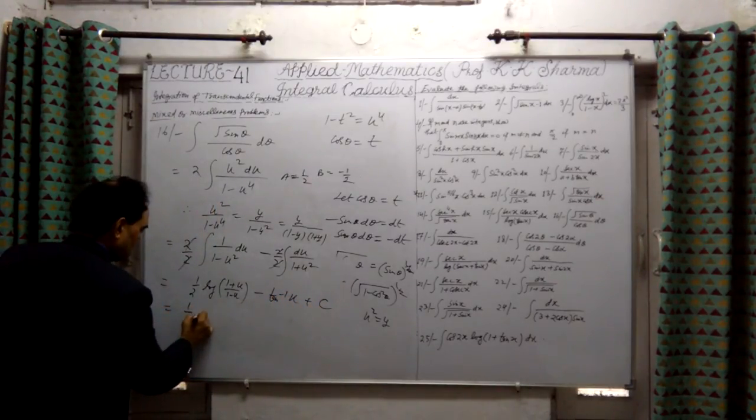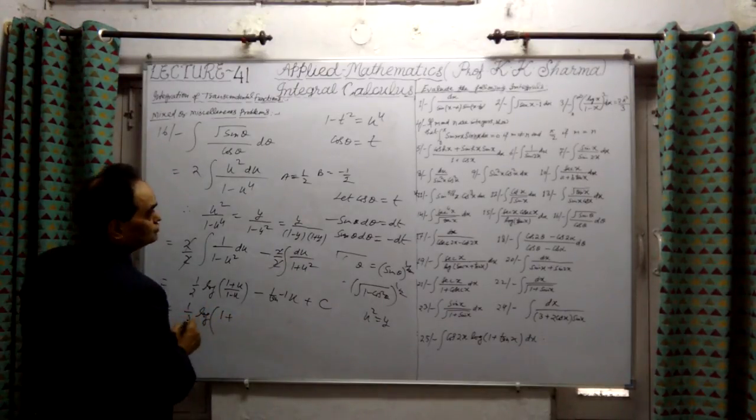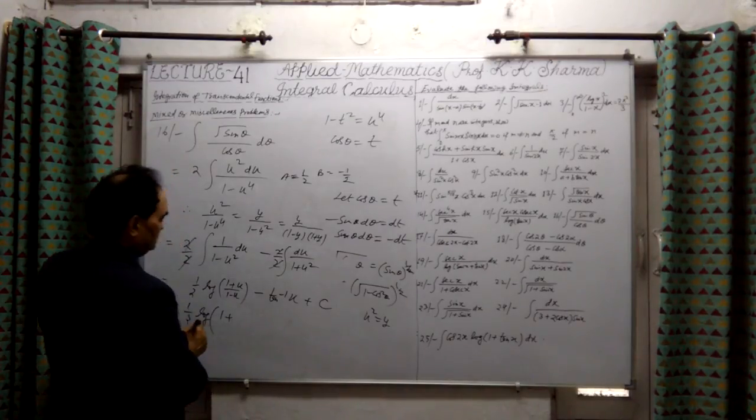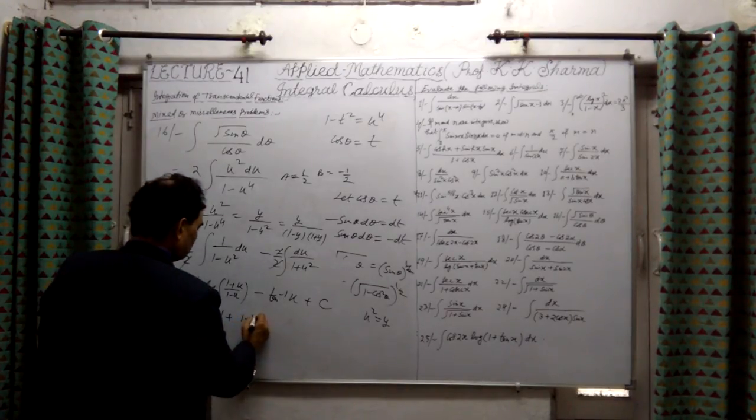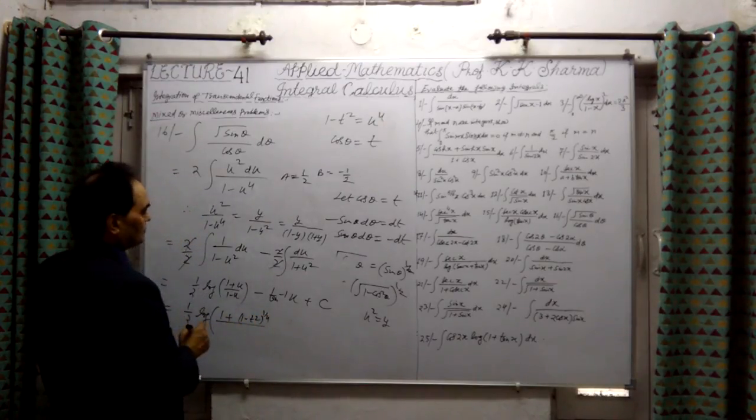First u, it is 1 plus u. U here is 1 minus t, 1 minus t squared equal to 1.4, only u.